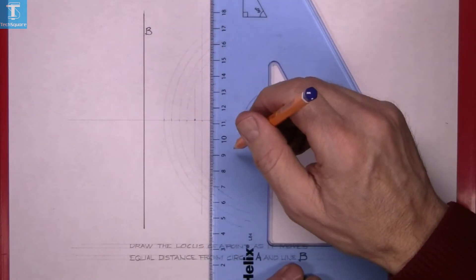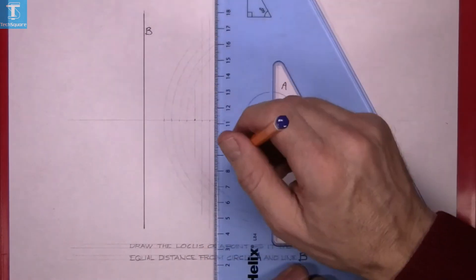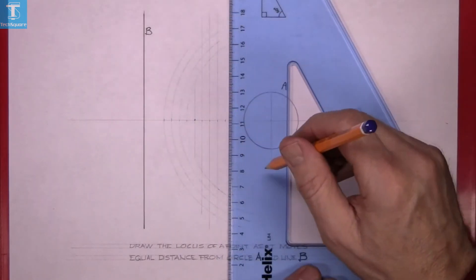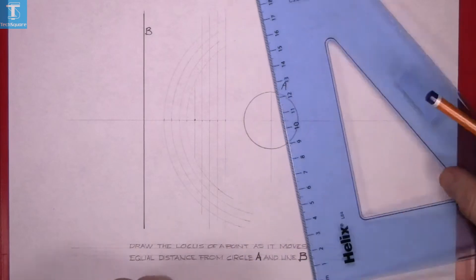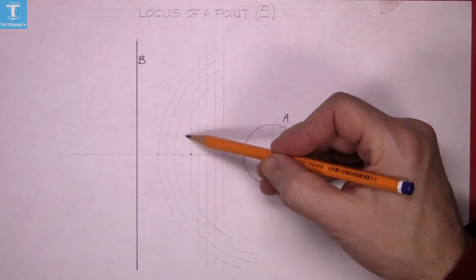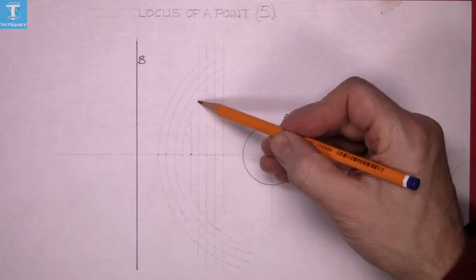And now the points you get from the line and the arc give you each of those points there.